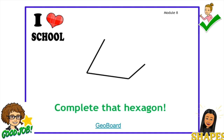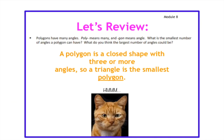Great job. Now let's review. Polygons have many angles. Poly means many, and gon means angle. What is the smallest number of angles a polygon can have? What do you think the largest number of angles it could have? Remember, a polygon is a closed shape with three or more angles, so a triangle is the smallest polygon. I would really like you to think about this question and send me a message via ClassDojo on what you think the largest number of angles could be.